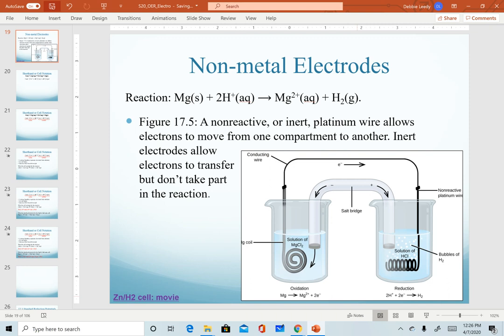In this video we will describe two quick topics. One is how we set up a galvanic cell when we don't have a metal electrode in our reaction, and to describe another notation we can use to describe both a reaction and a galvanic cell.